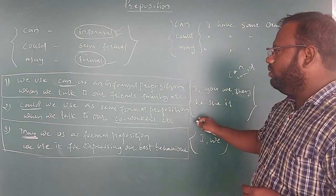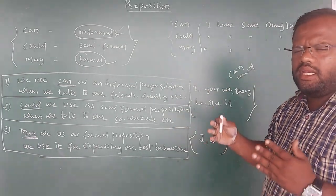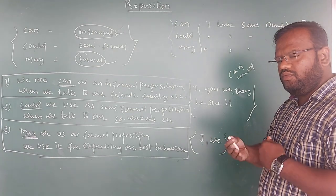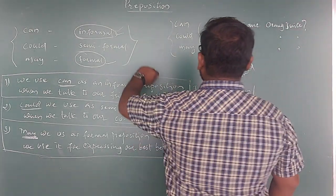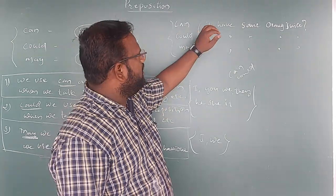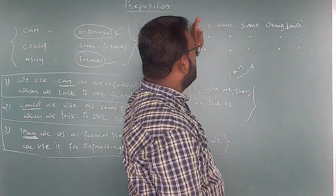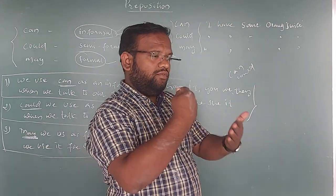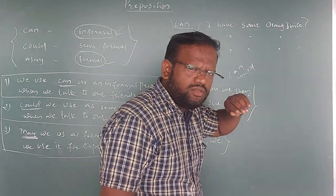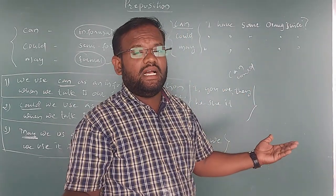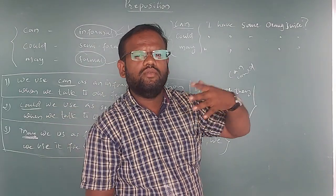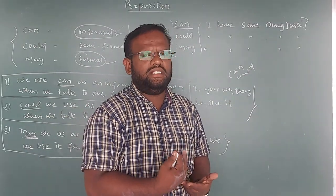So can and could can contain all pronouns — I, we, you, he, she, it, and they — while may is only for the first persons: I and we. Let's look at one example we can change into all three forms. Take the sentence: 'I have some orange juice.' As an assertive sentence it's straightforward, but if you put can in front: 'Can I have some juice?' — it becomes interrogative, used with family or friends.